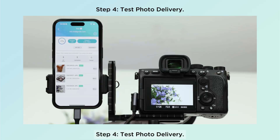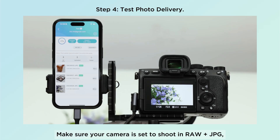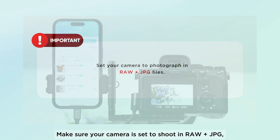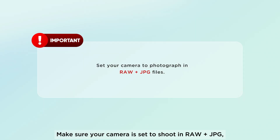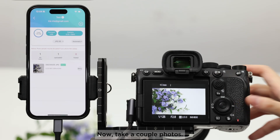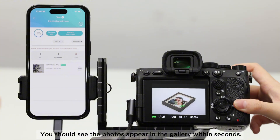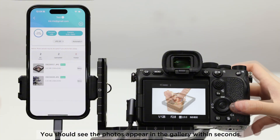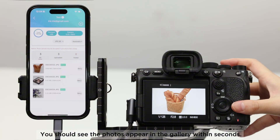Step 4: Test photo delivery. Make sure your camera is set to shoot in RAW + JPEG, since Xeno Instant accepts JPEG files. Now take a couple of photos. You should see the photos appear in the gallery within seconds.